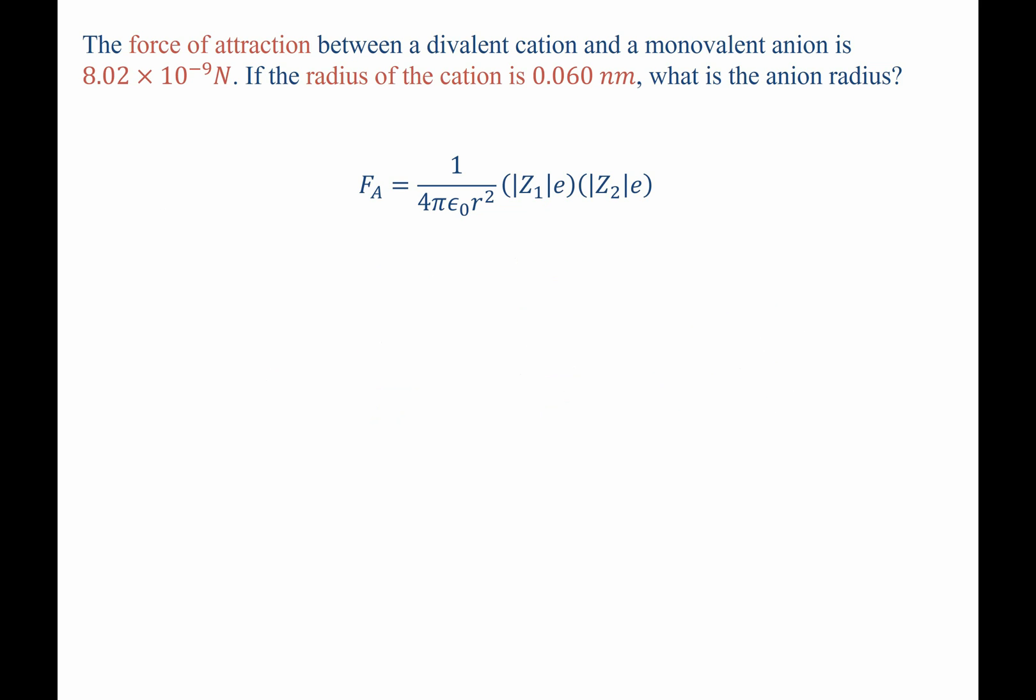Writing these out, we have the attractive force, which we know is equal to 1 over 4π epsilon naught R squared times Z1 (this is our divalent cation, so this is a positive 2 there, we put an absolute value) and we have a monovalent anion, so this is a negative 1 over here, but it's an absolute value.